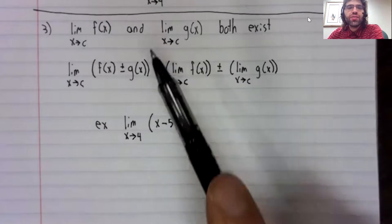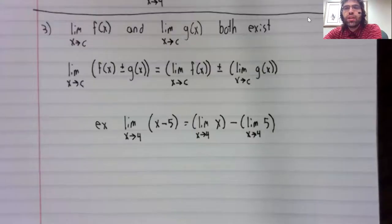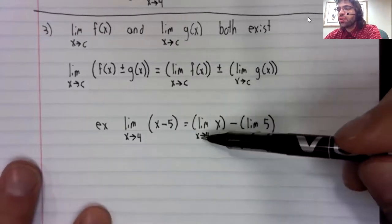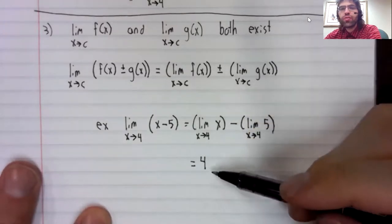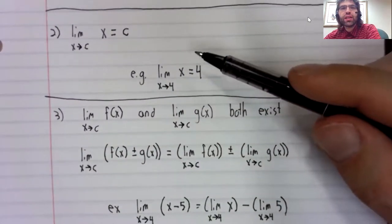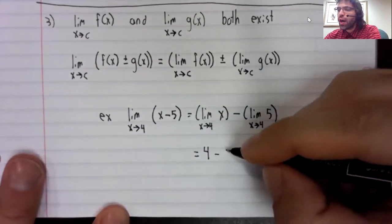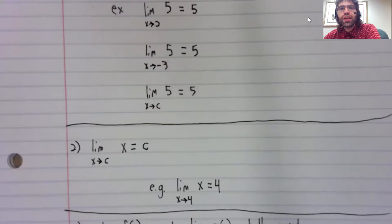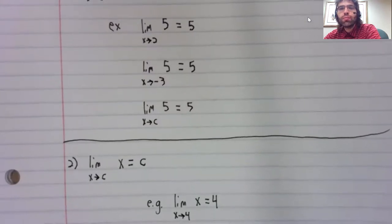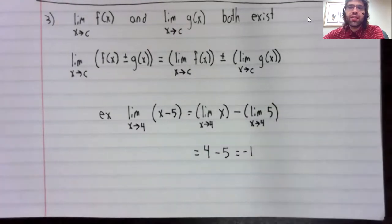So what this rule says is that if we have the limit of subtraction, we can break it up as the difference of limits. The limit as x approaches four of x is four. That's this second rule. And the limit as x approaches four of five is five. That's this first rule. So this limit is negative one.